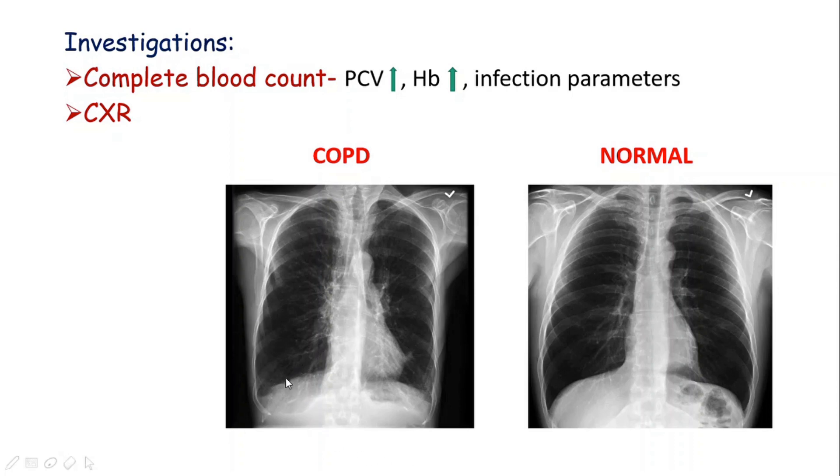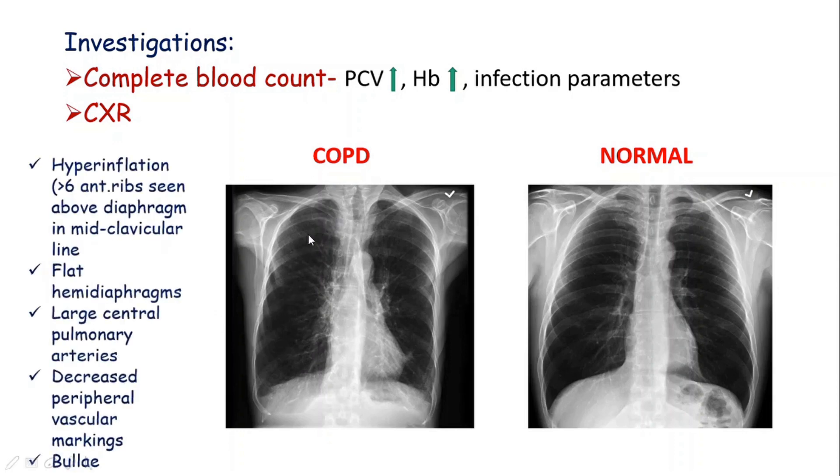Radiologically, if we count the anterior ribs seen above the diaphragm in the mid-clavicular line, it is often above 6. The flat hemidiaphragms are visible, contra the normal x-ray which has the curve maintained. Large central pulmonary arteries, decreased peripheral vascular markings and the bullae are often visible.